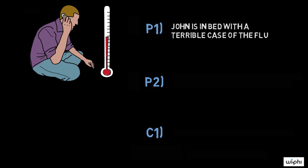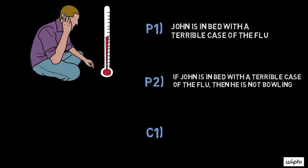Premise one, John is in bed with a terrible case of the flu. Premise two, if John is in bed with a terrible case of the flu, then he is not bowling. Conclusion, therefore, John is not bowling.